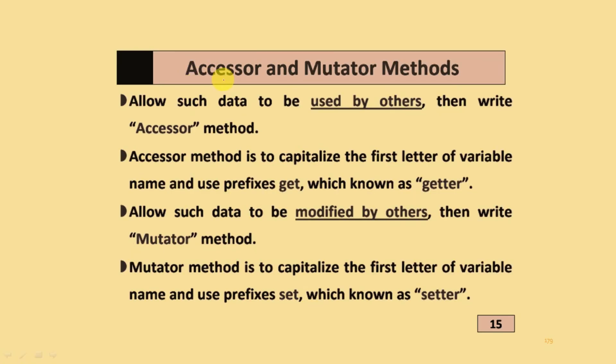Next topic is accessor and mutator methods. If you allow such data to be used by others, then write accessor method. Accessor method capitalizes the first letter of variable name and uses prefix get, which is known as getter. Mutator method capitalizes the first letter of variable name and uses prefix set, which is known as setter.